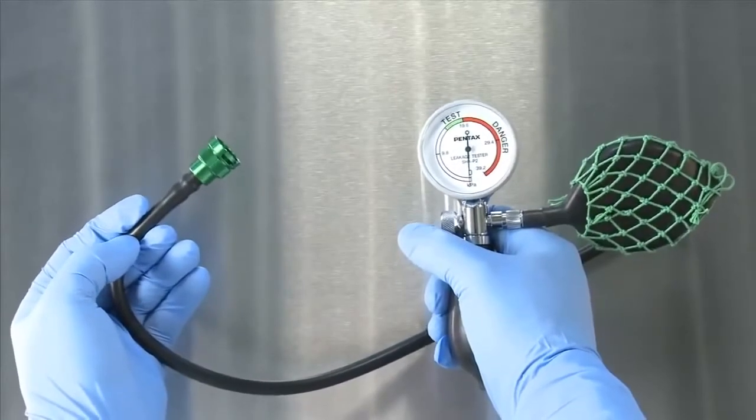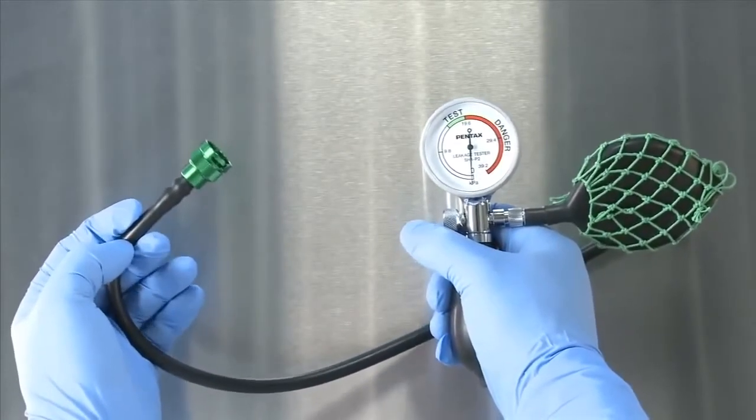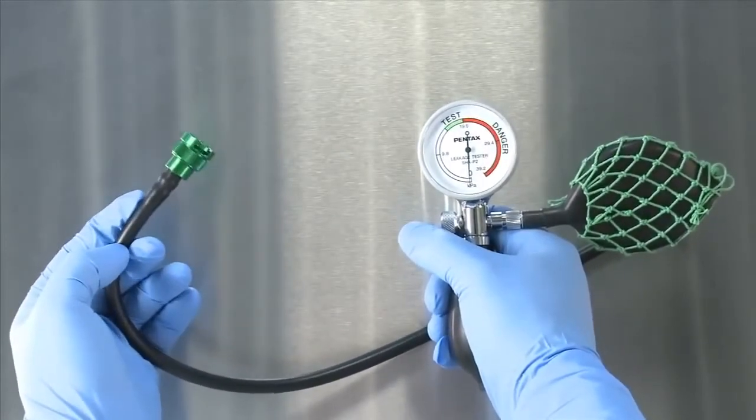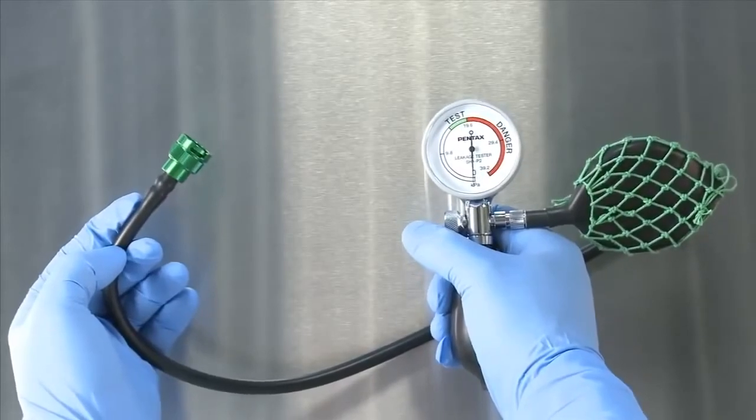If the needle stays in the green zone when pressure is released, the leakage tester may be damaged and another leakage tester should be used.